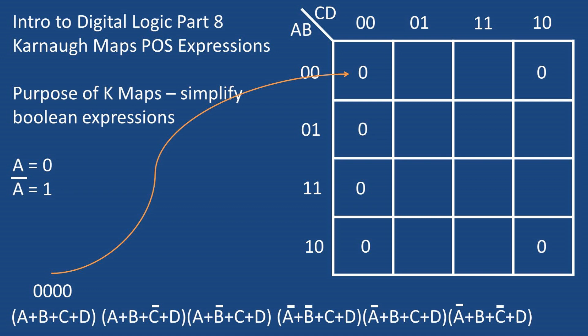Because this expression is represented by the first two variables 0-0 for A and B, which is the first row, and the second set of variables C and D are 0-0, which is represented by the first column. The second group of variables can be represented by 0-0-1-0 which corresponds to row one, column four.